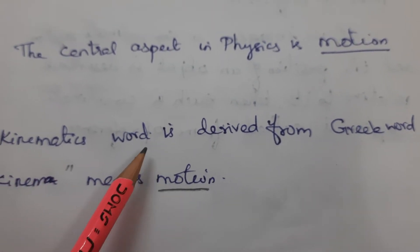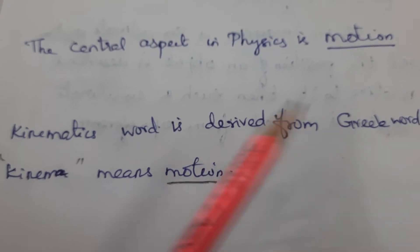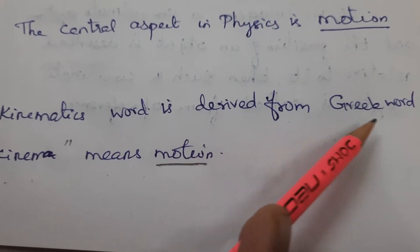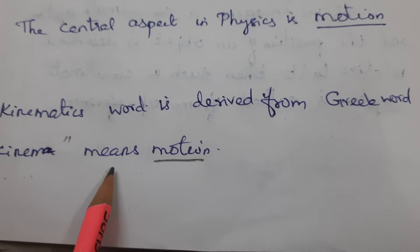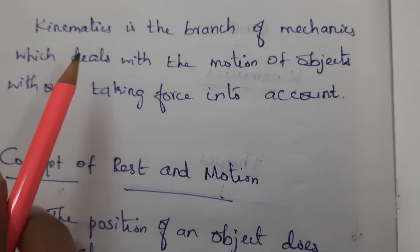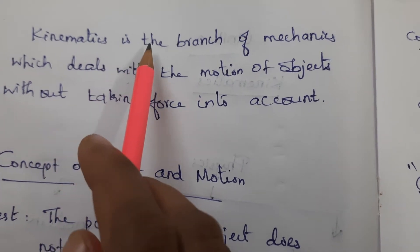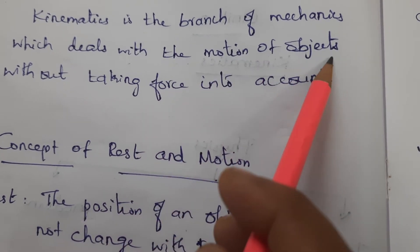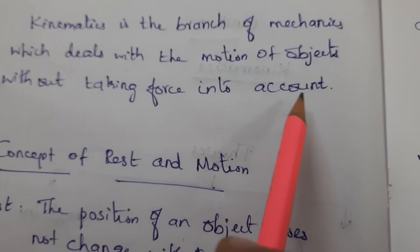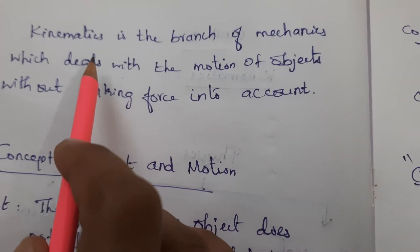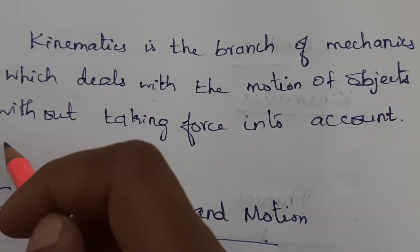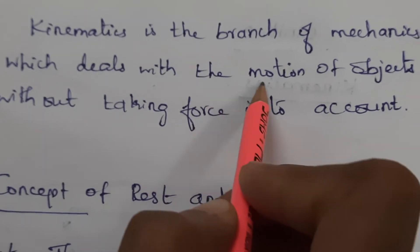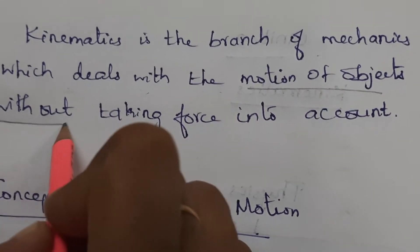Kinematics — the word is derived from the Greek word 'kinema', which means motion. Kinematics is the branch of mechanics which deals with the motion of objects without taking force into account.